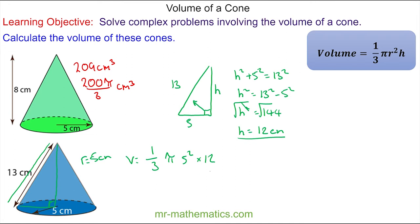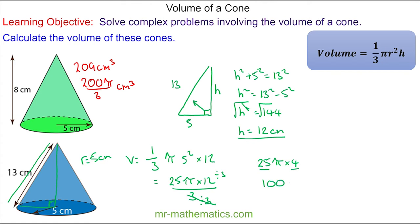We can simplify by writing this as a fraction: 25π × 12 over 3. Dividing the numerator and denominator by 3, these cancel, leaving 25π × 4. Since 25 × 4 = 100, the volume as a multiple of pi is 100π cm³.